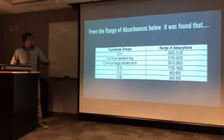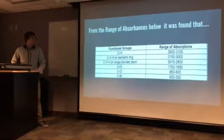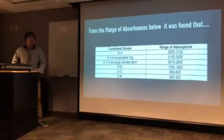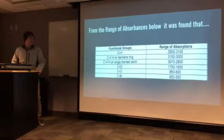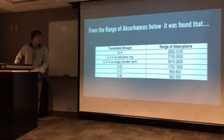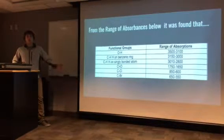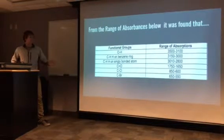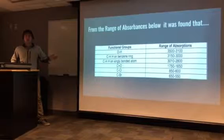A range of absorbencies were used, shown right here. From the functional groups listed — anywhere from oxygen-to-hydrogen bonded to carbon-to-bromine bonded — the absorbency ranges from 3500 to 550 were shown and grouped to help find out what type of functional group was present in our unknown.